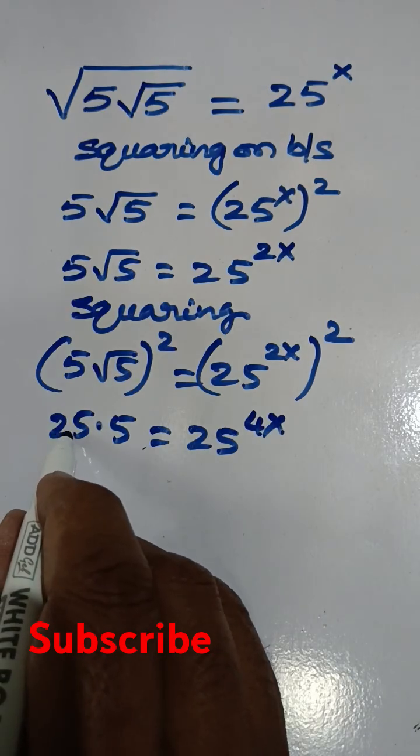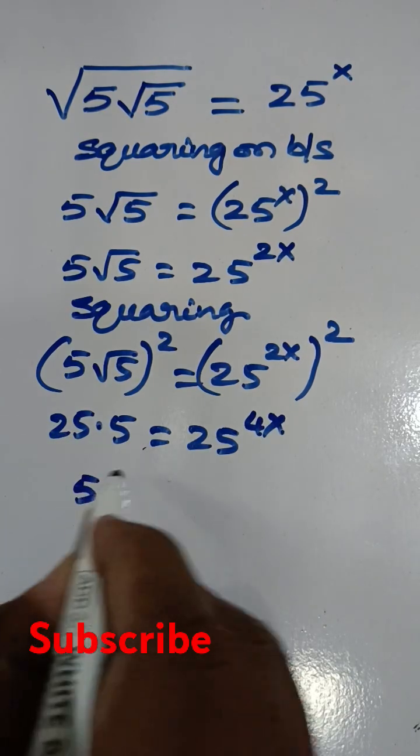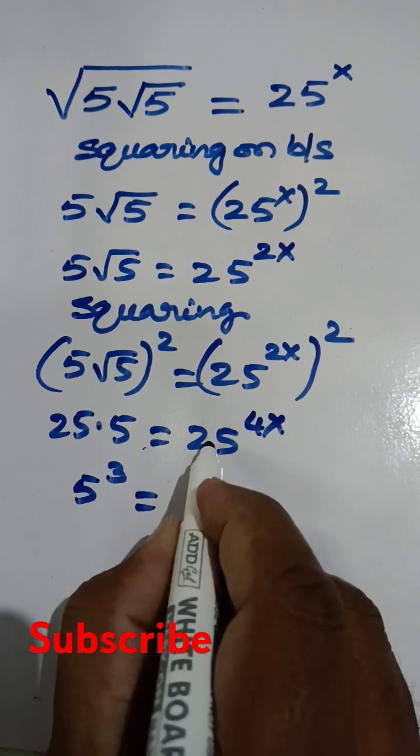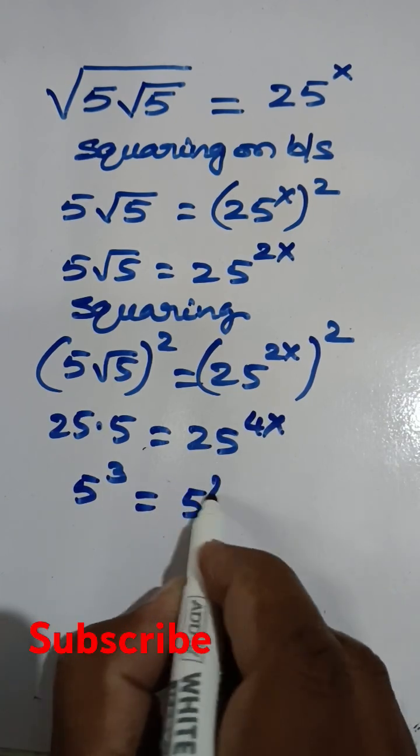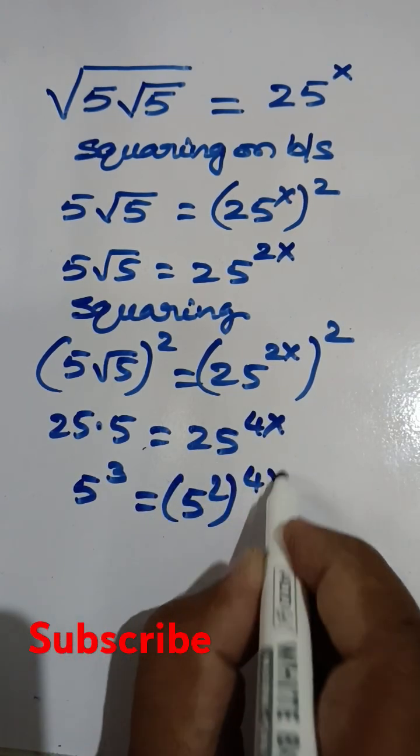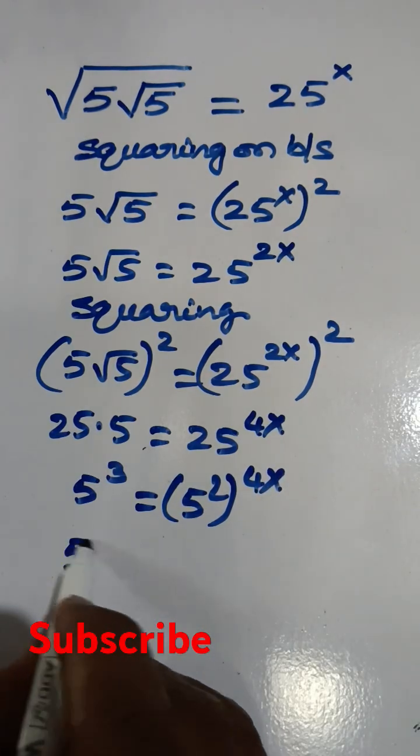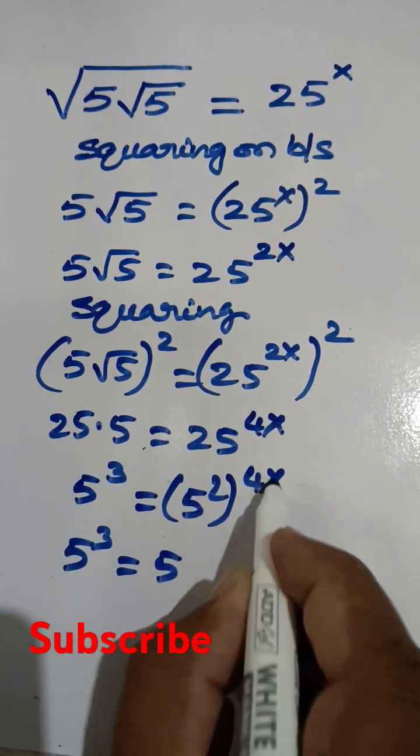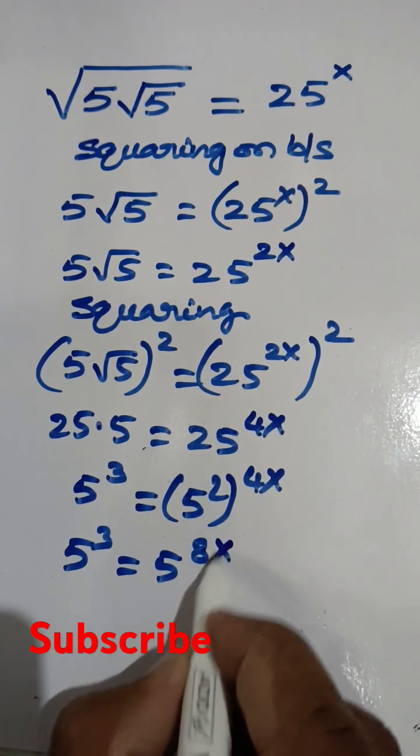Now 25·5 equals 5² times 5, which becomes 5³. And 25 to the power of 4x can be written as (5²)^(4x). So 5³ equals 5 to the power of 2 times 4x, which is 5^(8x).